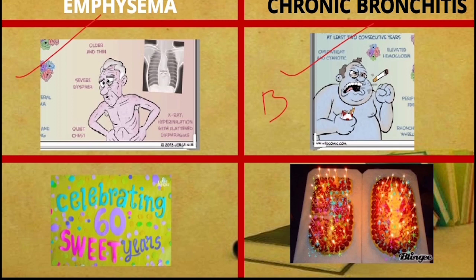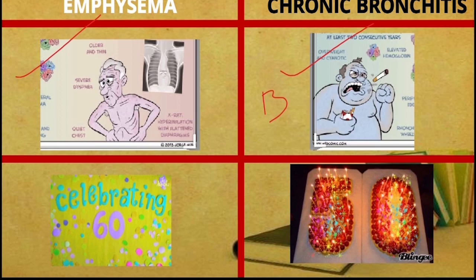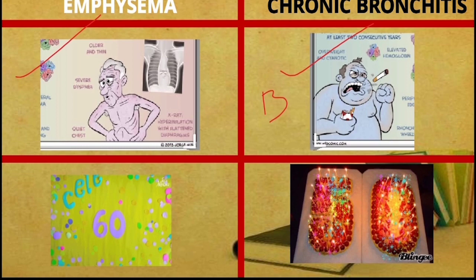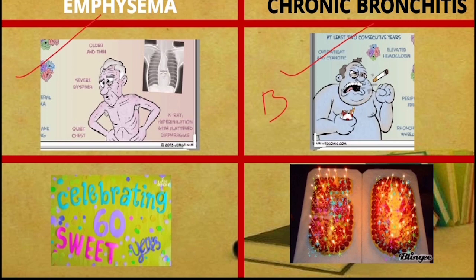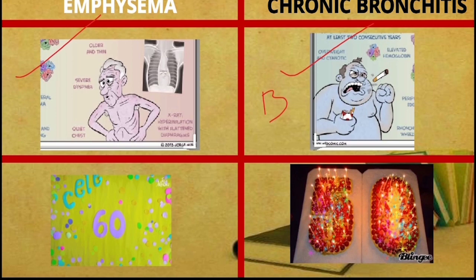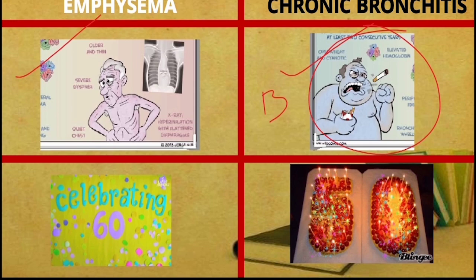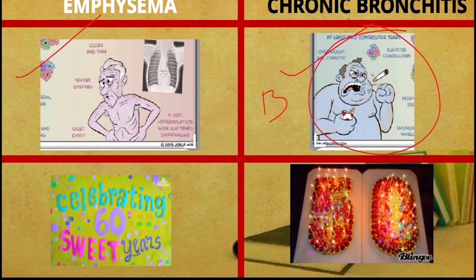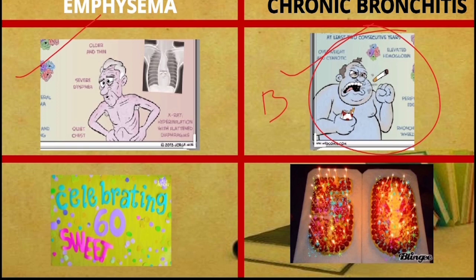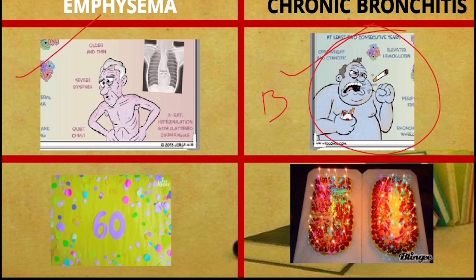In emphysema, the person finds it difficult to breathe and takes rapid breaths, causing exertion that produces a rose-to-pink tint on the face — that is why they are called pink puffers. In chronic bronchitis, the person takes deep breaths but there is only a low amount of oxygen in the air being breathed, so there will be symptoms of cyanosis — that is why the person appears blue in color.